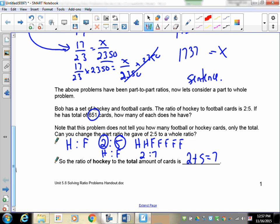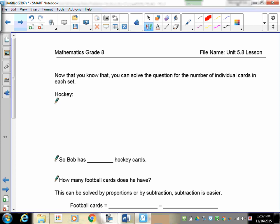So going on from that, I'm going to turn the page. Now that you know that, you can solve the question for the number of individual hockey cards in each set. So we know that the hockey cards, we had a 2 to 7 ratio, so that's 2 hockey cards for every 7 cards. And we need to know how many hockey cards for 651 cards. Alright, okay.